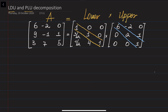All the entries on the diagonal of L are ones. But in some literature you might see that the diagonal entries of the upper triangular matrix are equal to one instead. Essentially, these two forms of the LU decomposition are interchangeable — it is possible that all the diagonal entries of U are equal to one, or all the diagonal entries of L are equal to one. We can change between these forms using a diagonal matrix in between them.